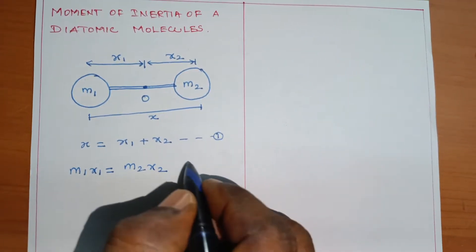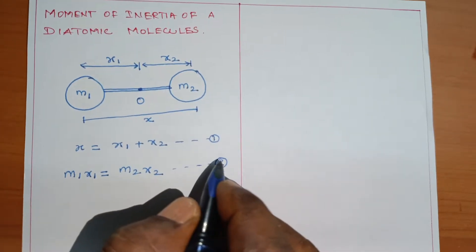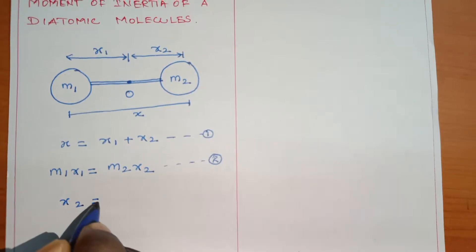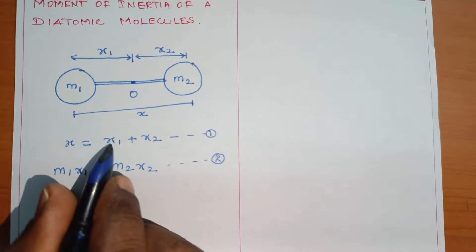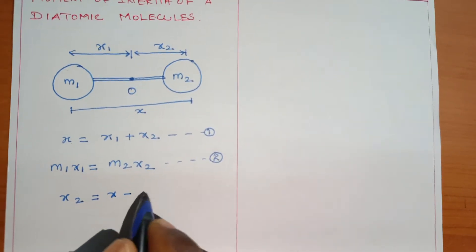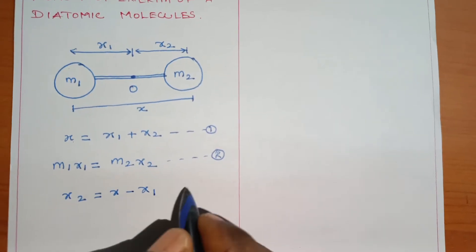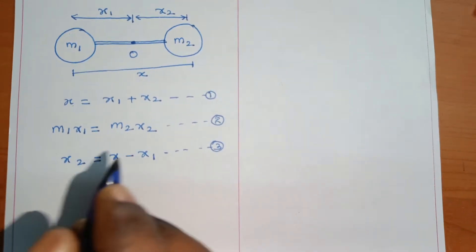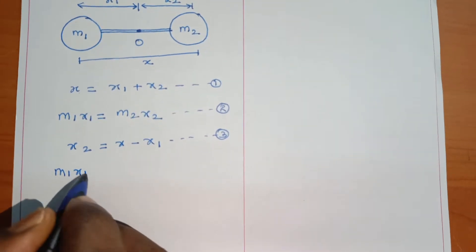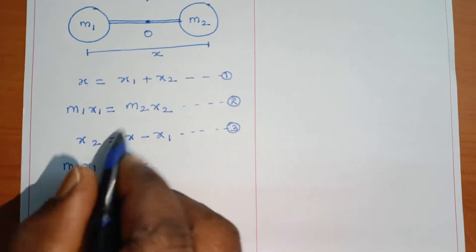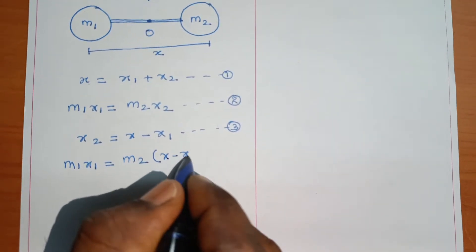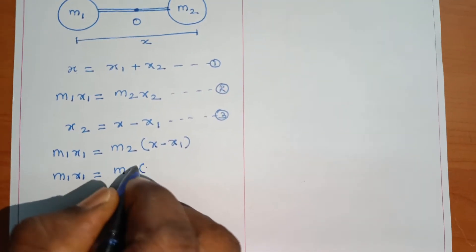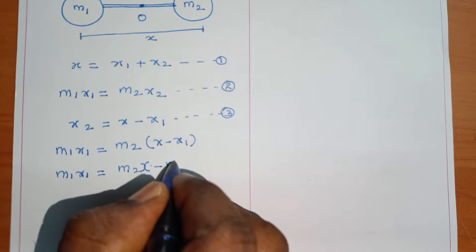This is M2 and this is M1. Equation 1 gives the length x2. We substitute x2 equal to x minus x1, and this is equation number 3. Now on equation 3 we will substitute: m1·x1 equals m2 into x minus x1. If you simplify, m1·x1 equals m2·x minus m2·x1.